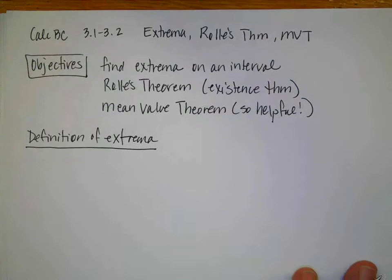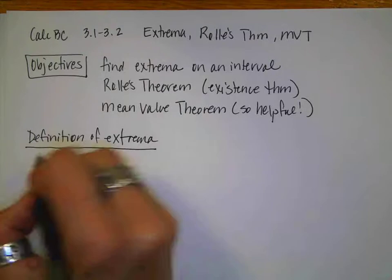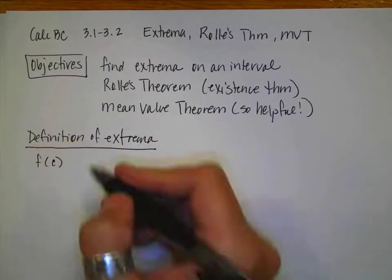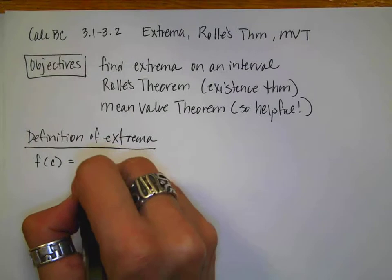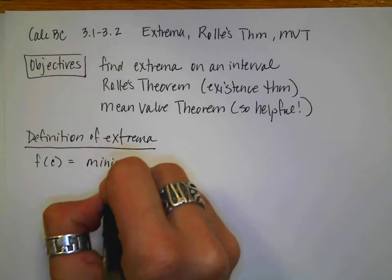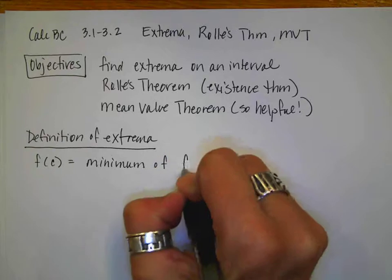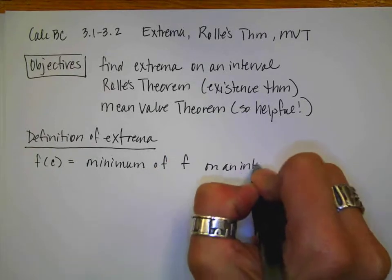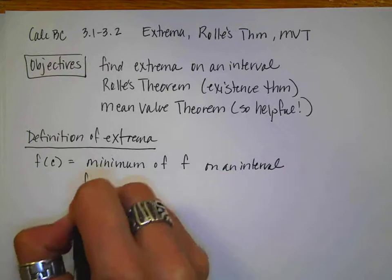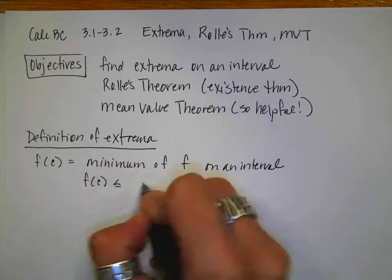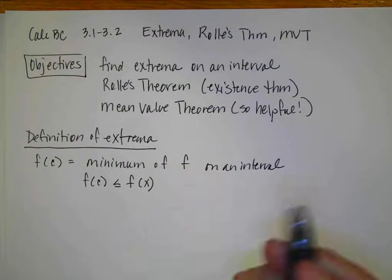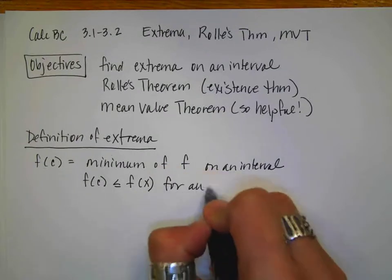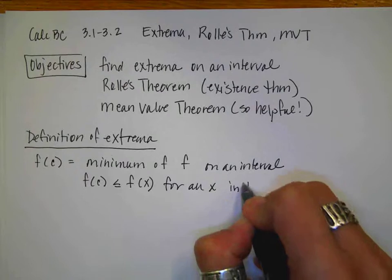Remember extrema can mean lots of different things. It can mean a minimum or a maximum, it could be a relative min or max, or it could be an absolute or global min or max. But in general, if I have a function evaluated at c and it is a minimum of the function on an interval, that means f of c is going to be less than or equal to all of the other y values for all x in that given interval.